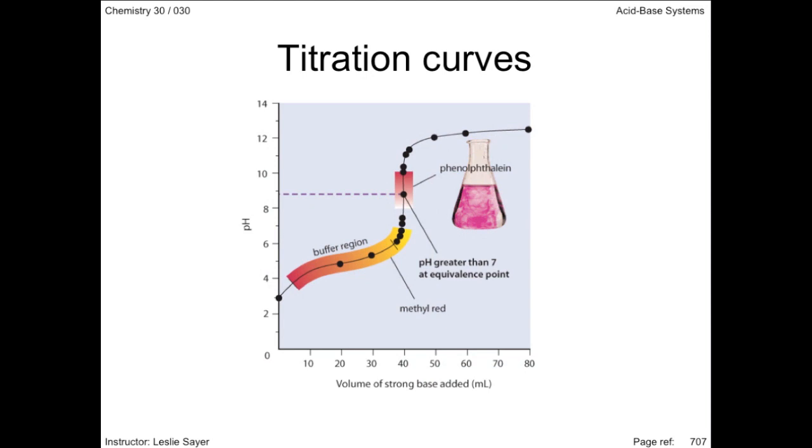This is a titration curve where the burette contains a strong base again, but the Erlenmeyer has a certain volume of weak acid. The initial pH is understandably higher than before, and the pH where all the acid has reacted following the addition of just the right amount of base is also higher. The reason for this is the weak acid partially ionizes, and the conjugate base reacts with the water, itself a very weak acid, forming hydroxide ions.